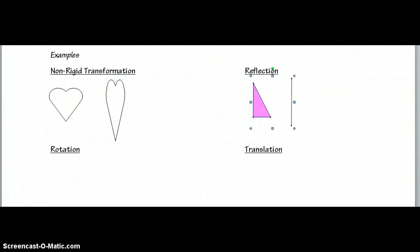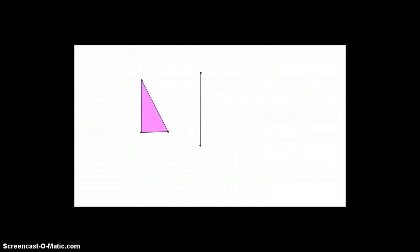A reflection is exactly what you think—a mirror image. I drew a right triangle and a line that's going to be my mirror. We're going to see what happens when you reflect over a line. When we reflect this triangle across the mirror, it shows up exactly on the other side.